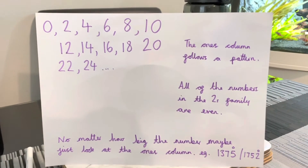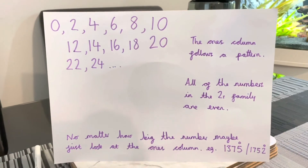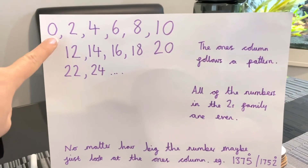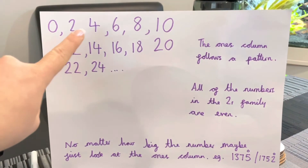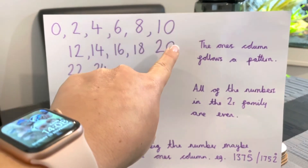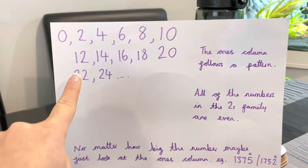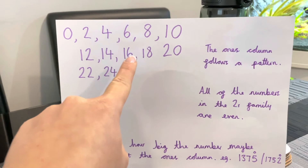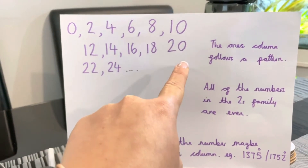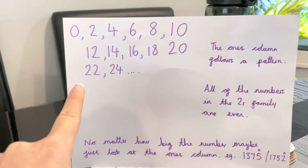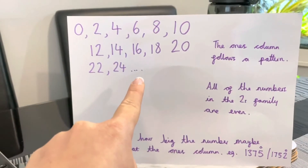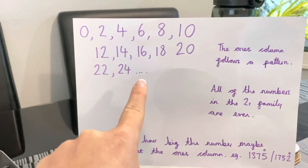And here you can see Miss Warne has been counting in twos. So zero, two, four, six, eight, ten, twelve, fourteen, sixteen, eighteen, twenty, twenty-two, twenty-four. And then you can see the next number here would be 26.